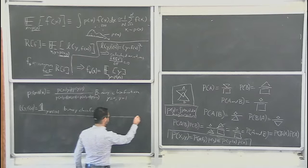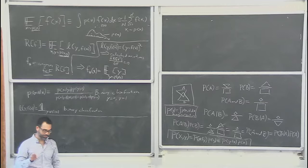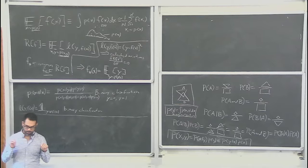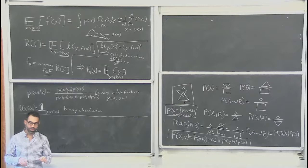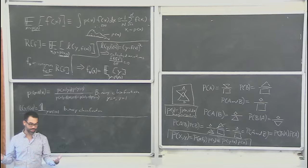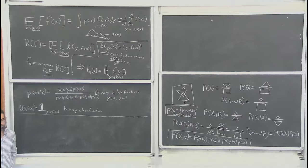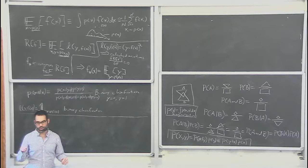Now I'll switch into particle physics gear for a second and talk about the Higgs discovery. When we search for a new particle like the Higgs, we set it up as a hypothesis test. We have a null hypothesis — standard model background with no Higgs boson — and an alternate hypothesis — background plus the Higgs. We're trying to choose between them based on data. We collected data at the LHC and claimed a discovery, but there's a precise probabilistic statement involved.